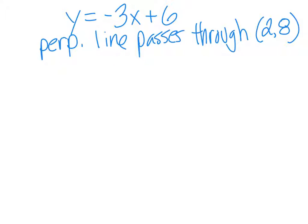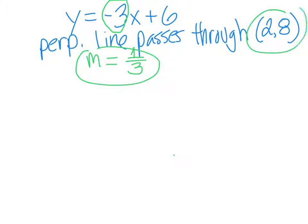First things first, I want to figure out what my slope is going to be. My slope is negative 3, so I want the opposite reciprocal — positive one-third. Now I have to come up with an equation that passes through that point. I have a slope and I have a point — that sounds like point-slope form! Point-slope form: y minus y1 equals m times x minus x1.